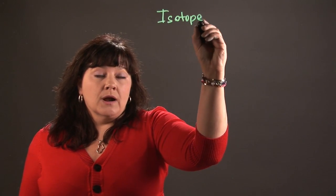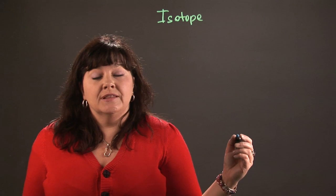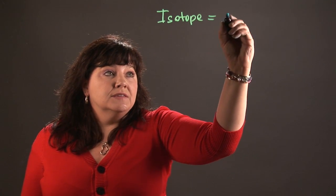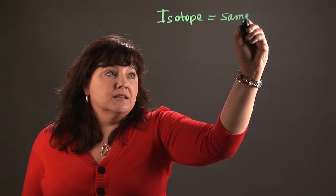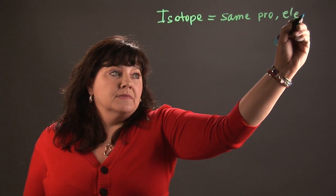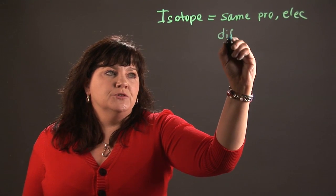Well, first of all, what's an isotope? Isotopes are different atoms of an element that have the same numbers of protons and electrons but they have different numbers of neutrons.